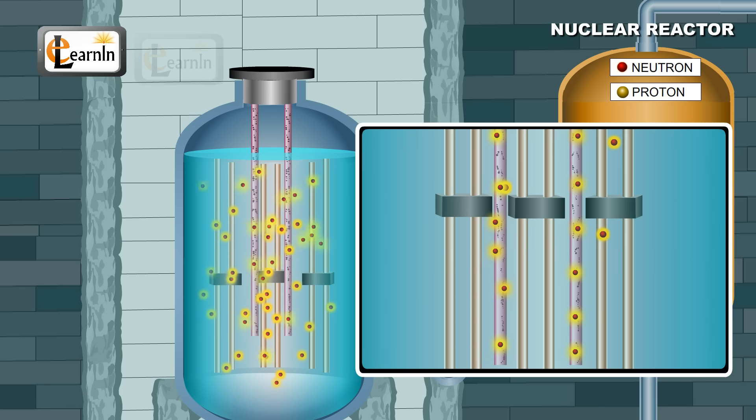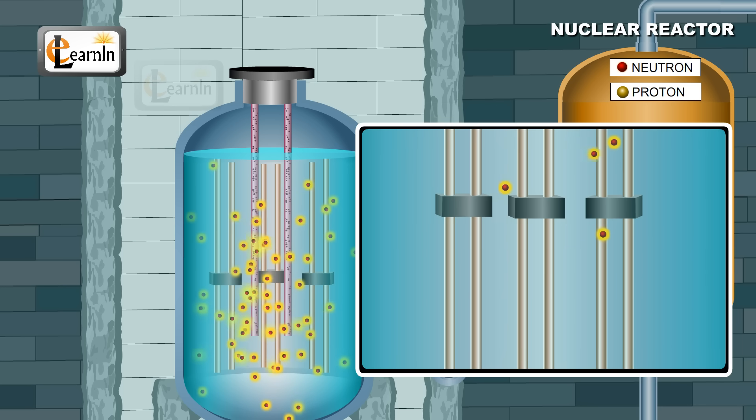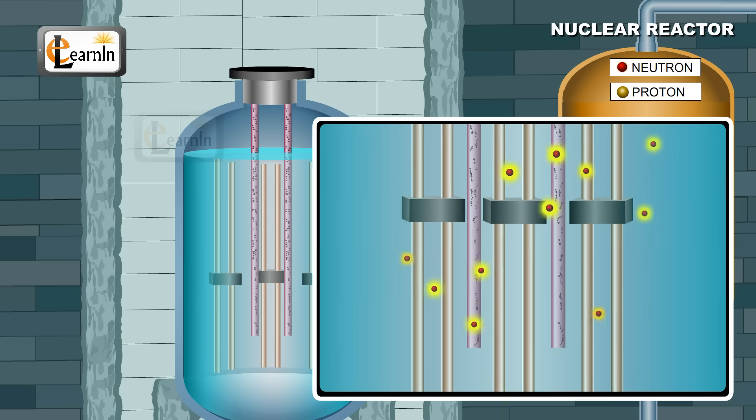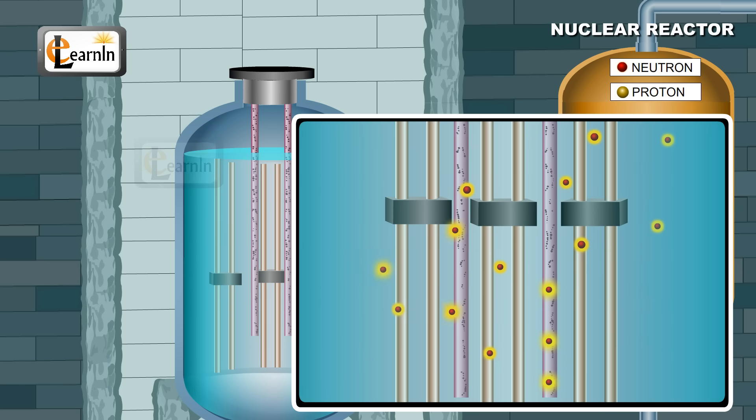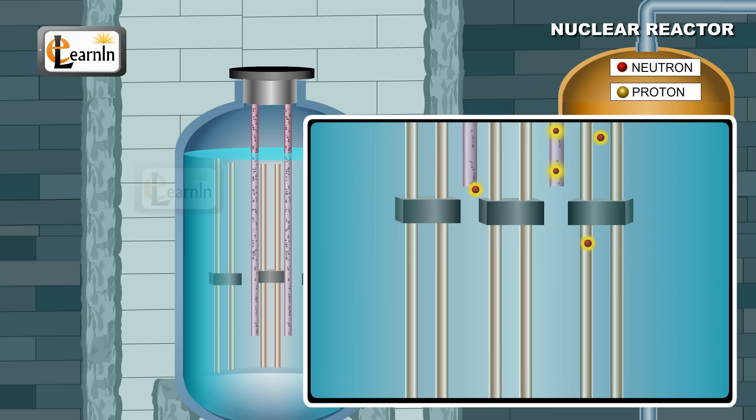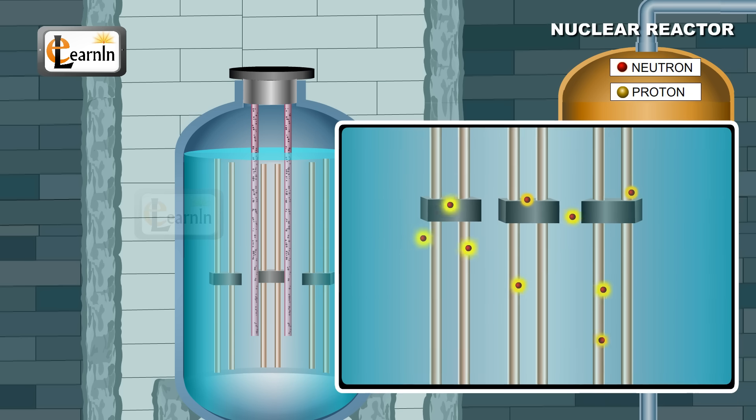To increase the rate of fission reactions, these rods can be removed from the moderator. A steady output of energy can be maintained by inserting or removing the control rods in the nuclear reactor.